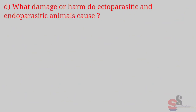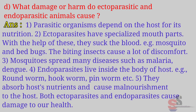D. What damage or harm do ectoparasitic and endoparasitic animals cause? Answer: Parasitic organisms depend on the host for nutrition. Ectoparasites have specialized mouth parts with which they suck blood — for example, mosquitoes and bed bugs. Biting insects cause a lot of discomfort; mosquitoes spread many diseases such as malaria and dengue. Endoparasites live inside the body of the host — for example, roundworm, hookworm, pinworm. They absorb host nutrients and cause malnourishment. Both ectoparasites and endoparasites cause damage to our health.